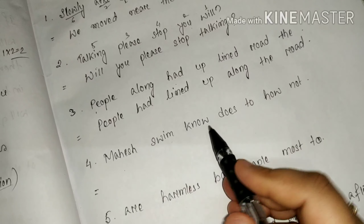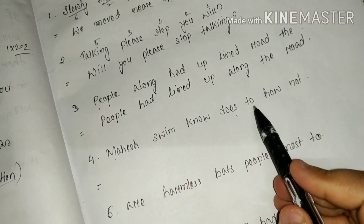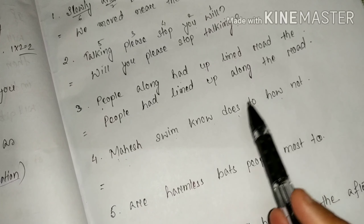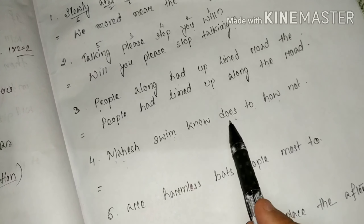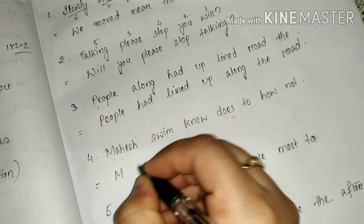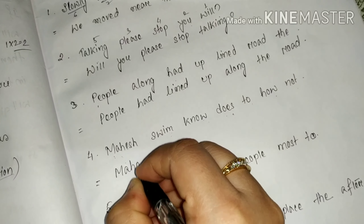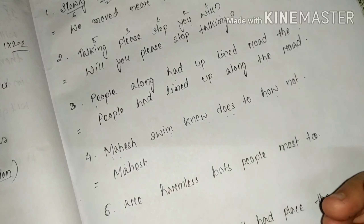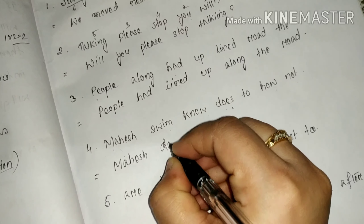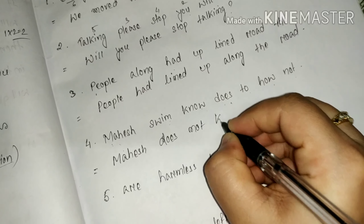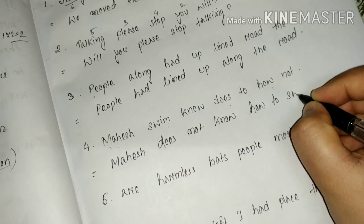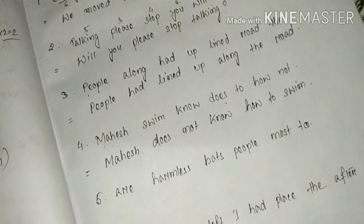Next: Mahes, swim, does, not, how, to. Mahes does not know how to swim. Yes, we have got it. Mahes does not know how to swim. As simple as that.